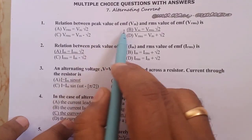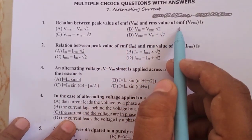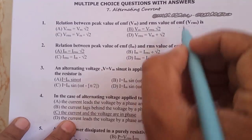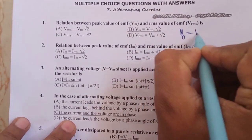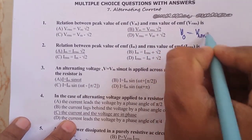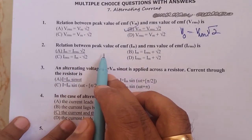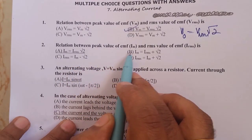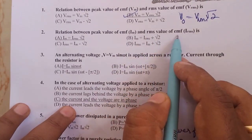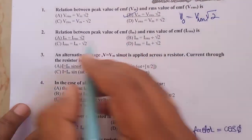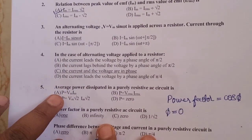Relation between peak value of EMF Vm and the RMS value Vrms is given by V0 is equal to Vrms into root 2, that is option B. Relation between peak value of EMF and RMS value of current is given by Im is equal to Irms into root 2.